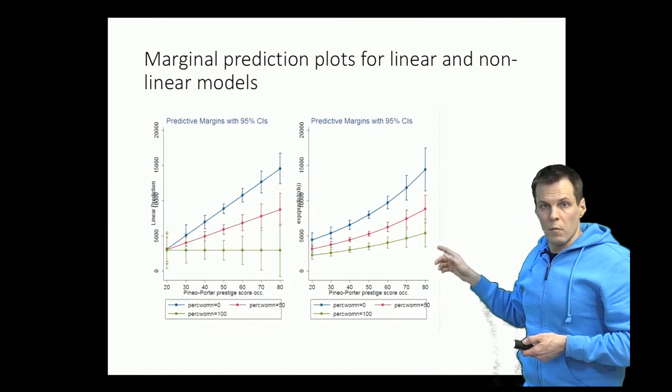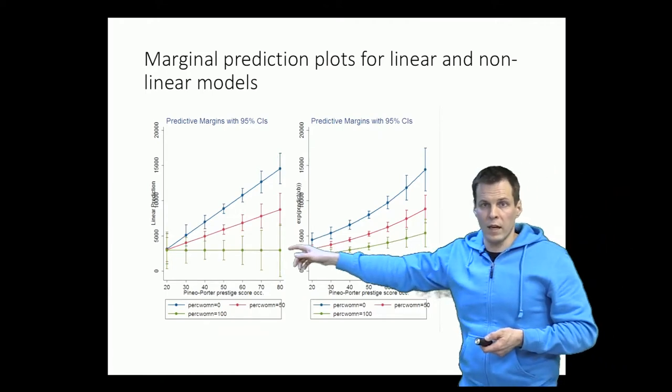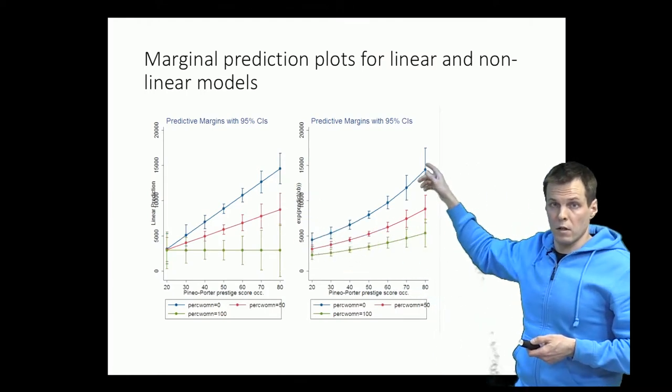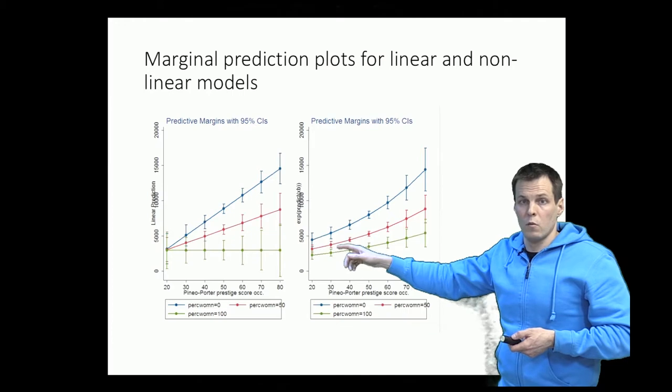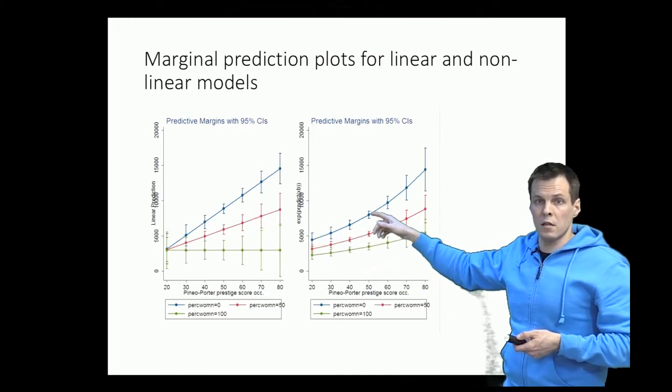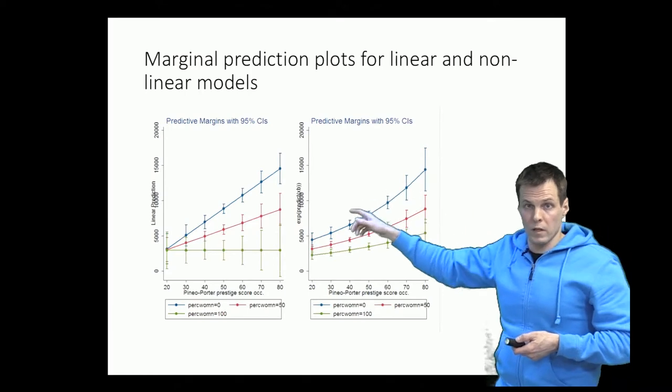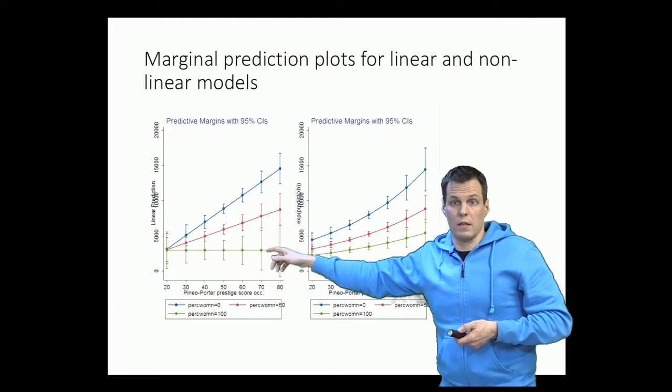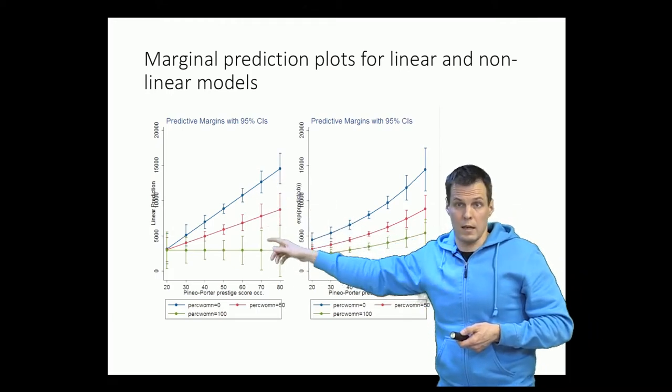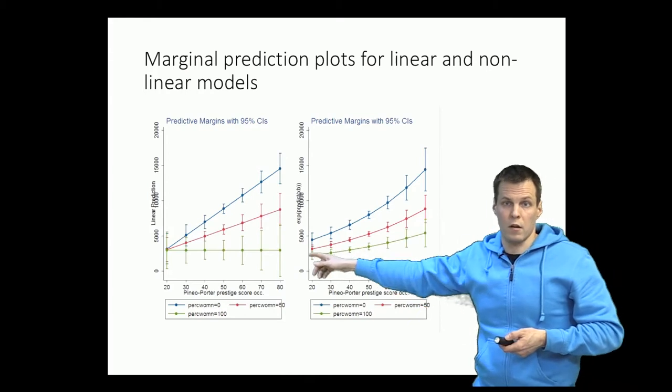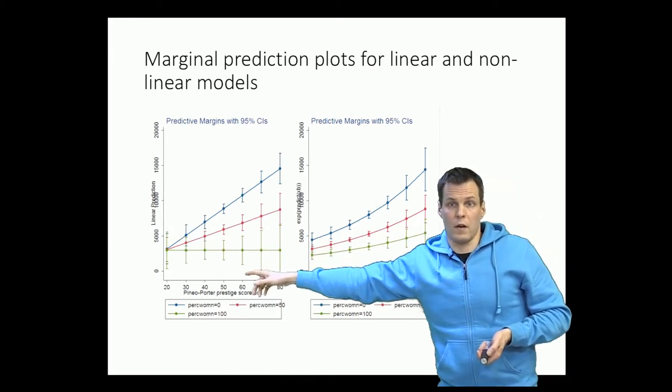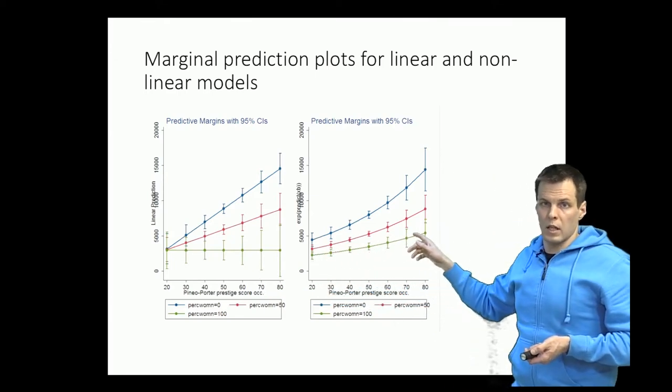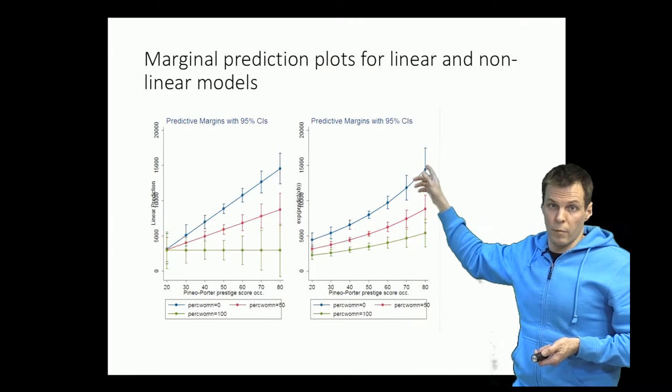This is from STATA again - the margins plot command. We have linear effects here and we have curvilinear effects here. These are relative effects. We have the effect of increasing prestige on income for male dominated professions and women dominated professions, and here we have the same effects with lines. As you can see, the interpretations are quite different. Here women get no income at all as a function of prestige - no increase at all. Here they get a relative increase, but the absolute increase is less than for men dominated professions.